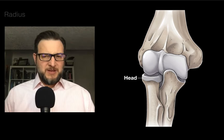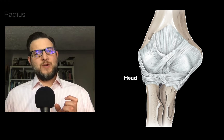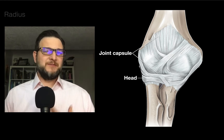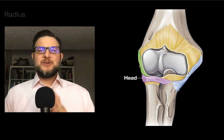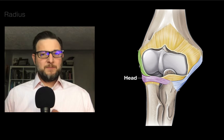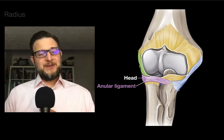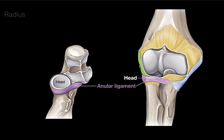If we zoom in to see the head of the radius, it is anchored within the ulna and the humerus by this joint capsule of dense collagenous connective tissue. With a little step dissection, you can see in pink or purple the annular ligament — part of the joint capsule — which forms a ring around that head and keeps it anchored into the ulna.